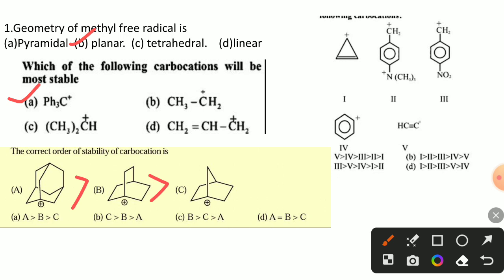In the next question, the order of stability of carbocations — the first carbocation is cyclophenyl carbocation. This is an aromatic carbocation with a 2π electron conjugated system, so it is more stable. The fourth and fifth carbocations have a positive charged carbon that is sp2 hybridized. These sp2 carbons are more electronegative compared to ordinary carbocations.